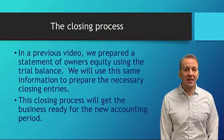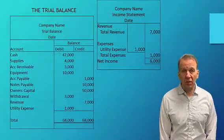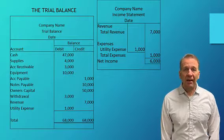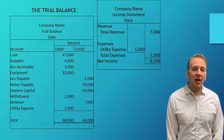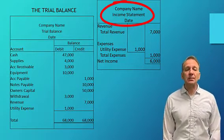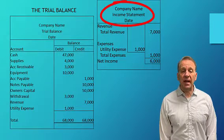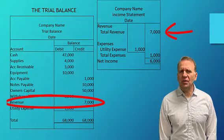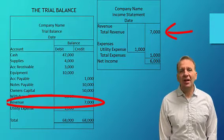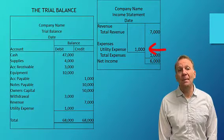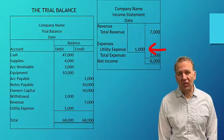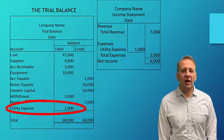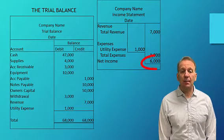Let's take a look at this trial balance that we've been using previously. You can see it's the same numbers that we had before. And off to the side, you can see the income statement. The income statement shows the revenues of $7,000, which is coming from our trial balance. And it shows in this example just one expense. Most businesses will have several or many expenses, but for our example, we just have one expense, utility expense of $1,000. So our net income is $6,000.